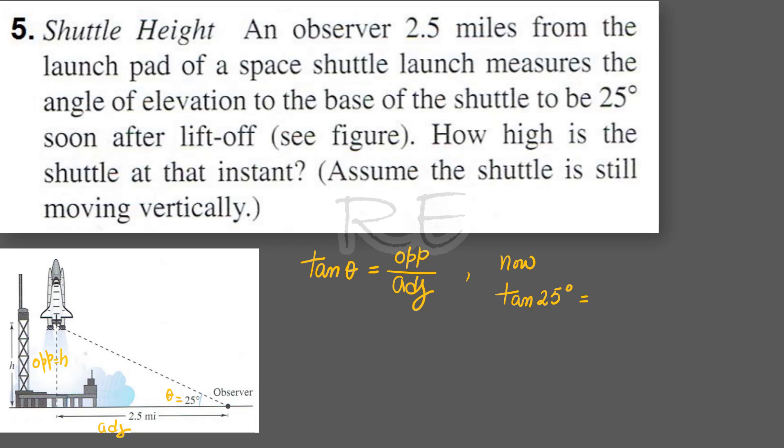Tangent 25 degrees is therefore equal to the height of the shuttle divided by the adjacent side, 2.5 miles.